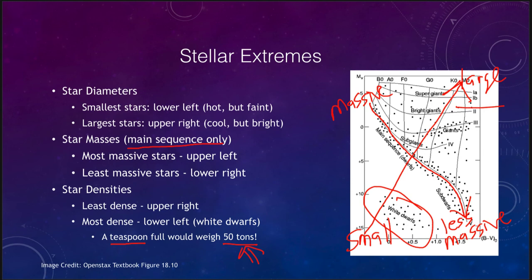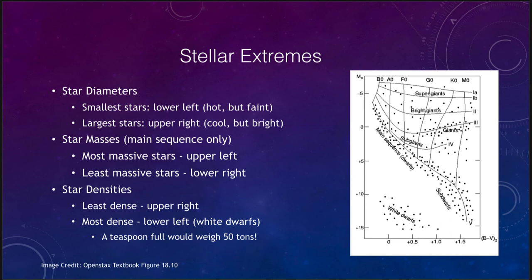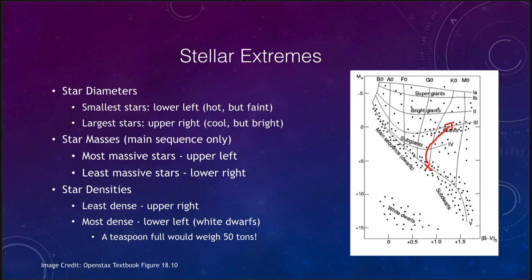We can learn about stars by how they move around on the HR diagram. Within our lifetime, a star will never change its position — our sun has been at its current location for about 5 billion years and will stay there for about 5 billion more. Only when it has exhausted its energy supply will it start to move toward the giant branch and eventually become a red giant, growing larger and cooling off. Every star we see will not change in a human lifetime or even several human lifetimes — it takes millions or even billions of years to see significant changes.